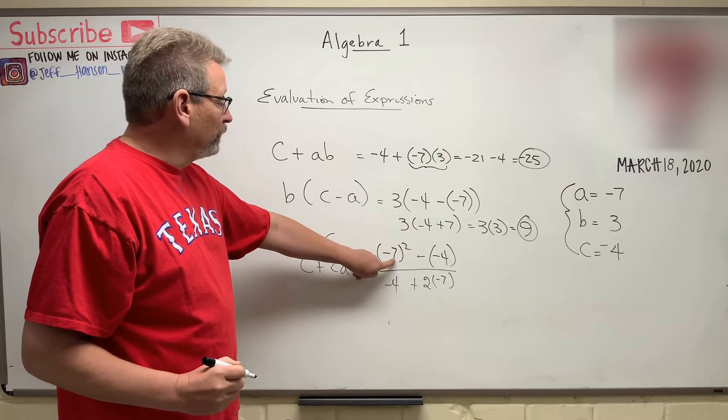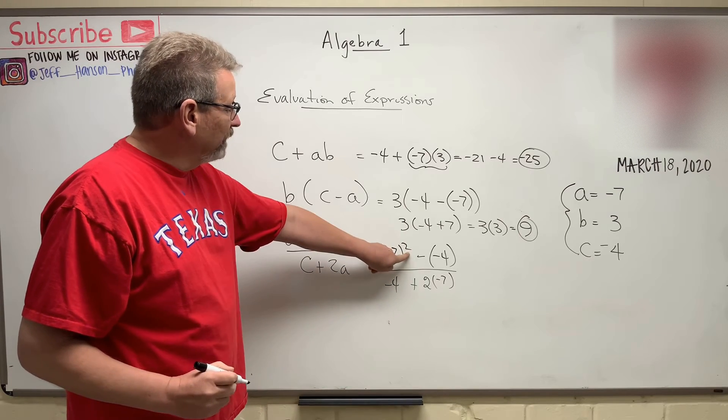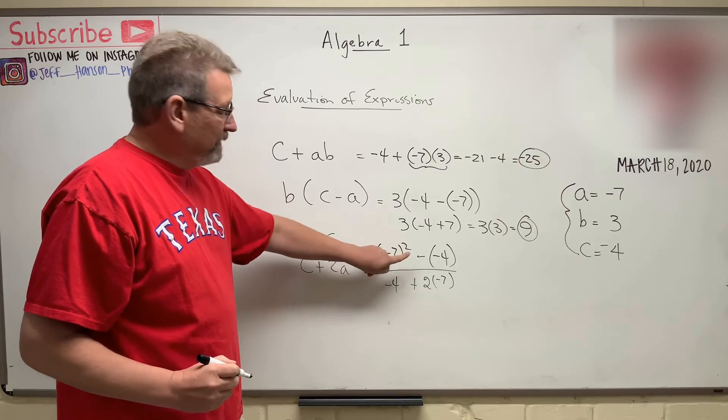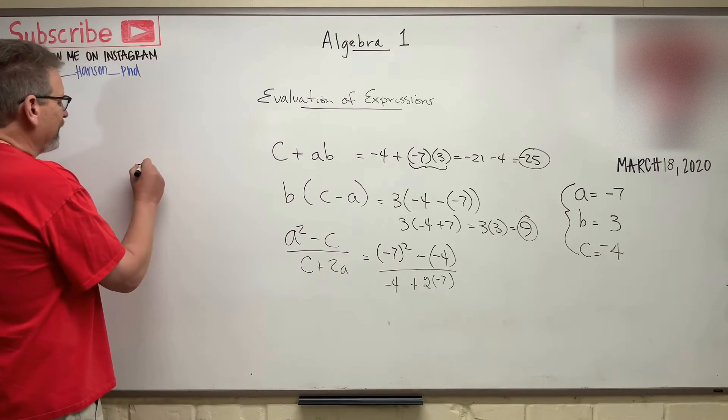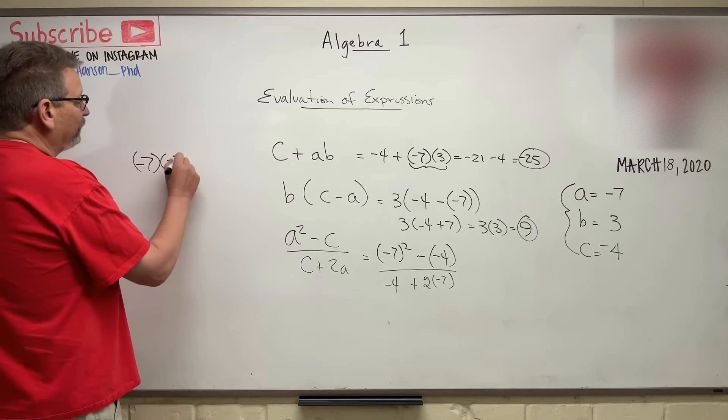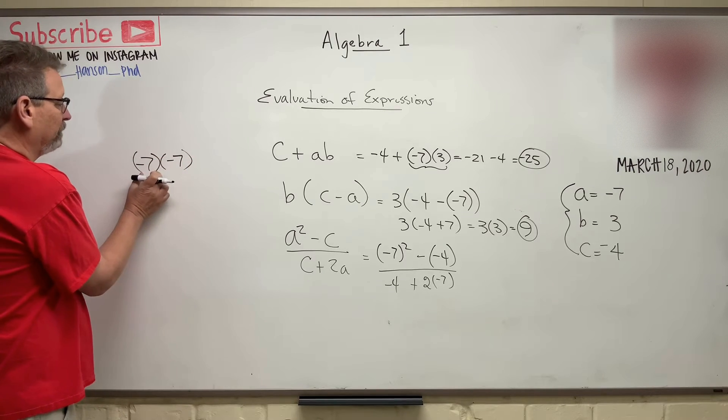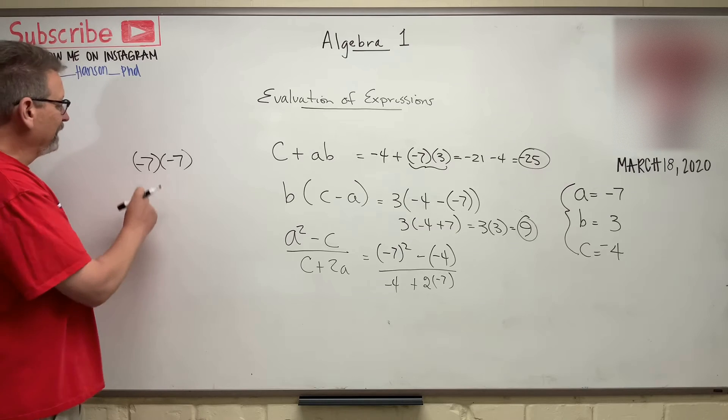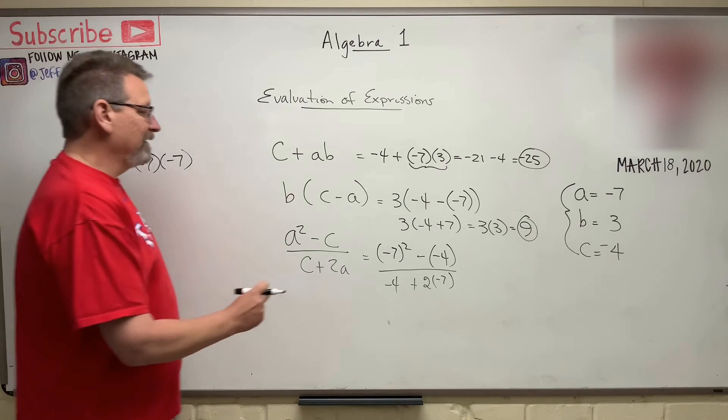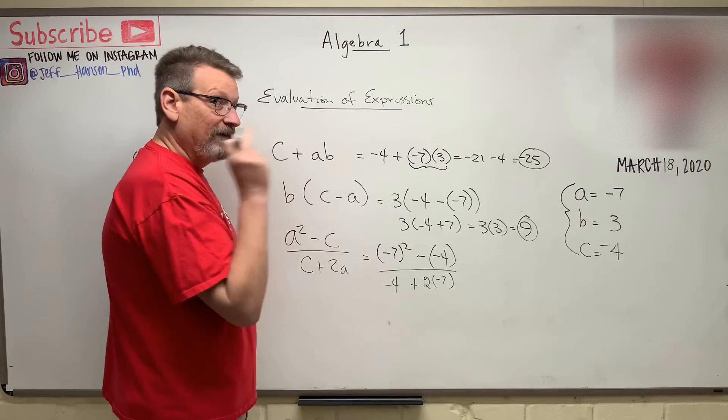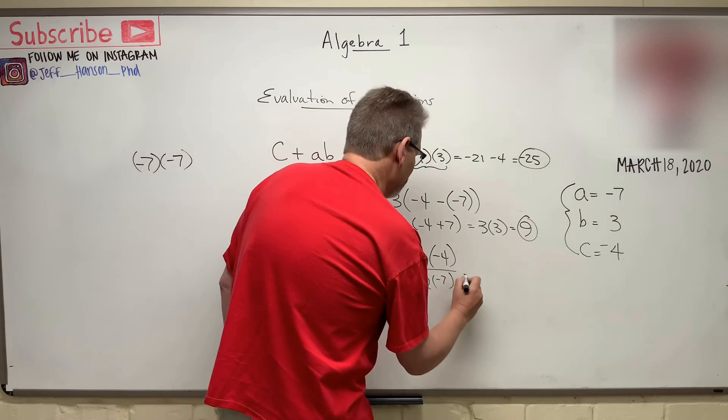We'll do the minus seven and there's our exponent, right? So what is minus seven squared? What that really is, is minus seven times minus seven, right? That's squared means it's multiplied by itself. And what is a minus times a minus? A positive, right? So seven times seven is 49. So that becomes 49.